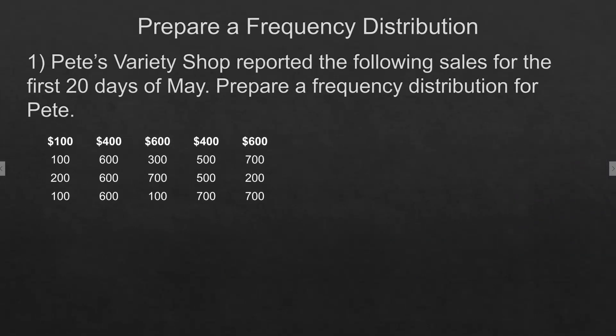Okay so we are going to make a table as one of the examples here. We're going to just write out each part of this. Pete's Variety Shop reported the following sales for the first 20 days of May so we're going to label one column sales and then we're going to have our tally marks and then total it here for the frequency of each sale.